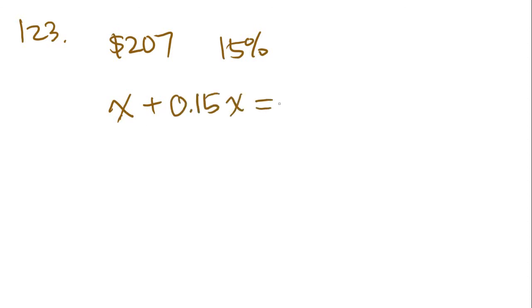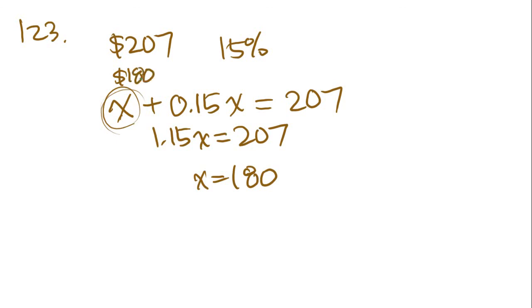So, it's going to be 0.15X. And that whole thing is going to add up to $207. So, then we add these together to get 1.15X equals 207. And we divide. And by doing that, we're going to get X equals 180. So, what we've just figured out here is that they paid 180 for the meal. Then they paid gratuity to get 207.